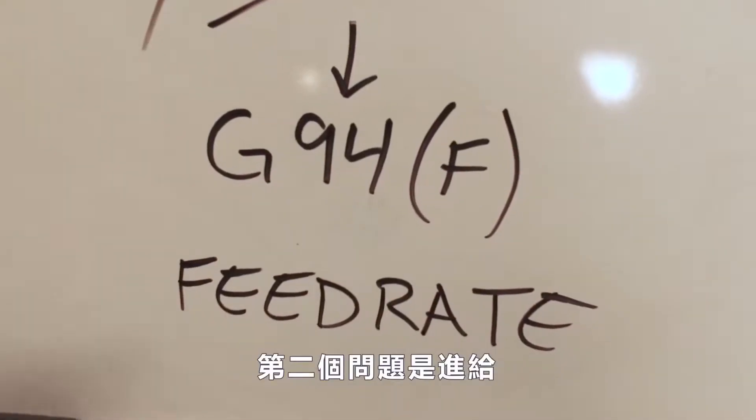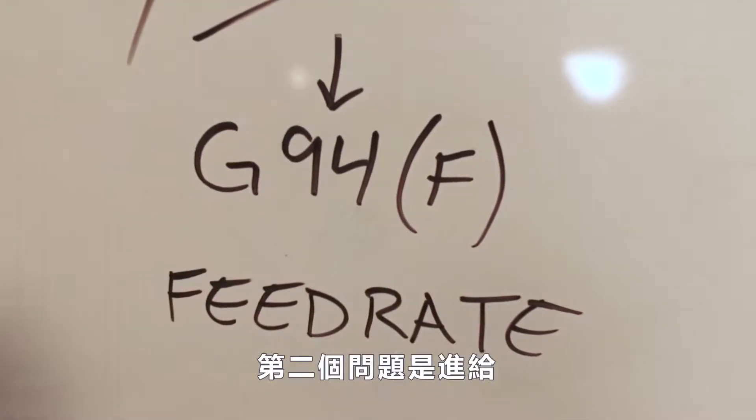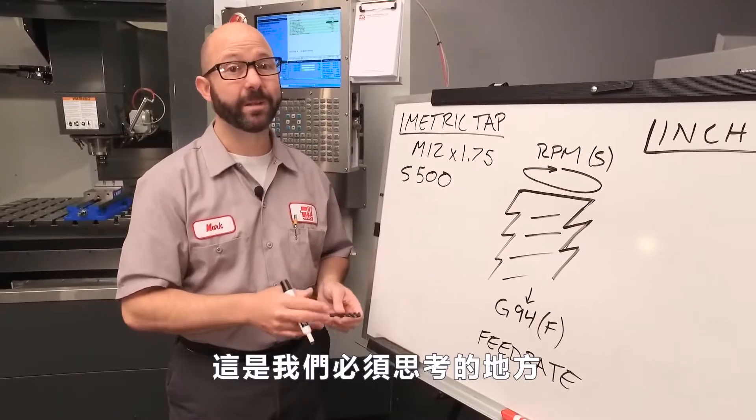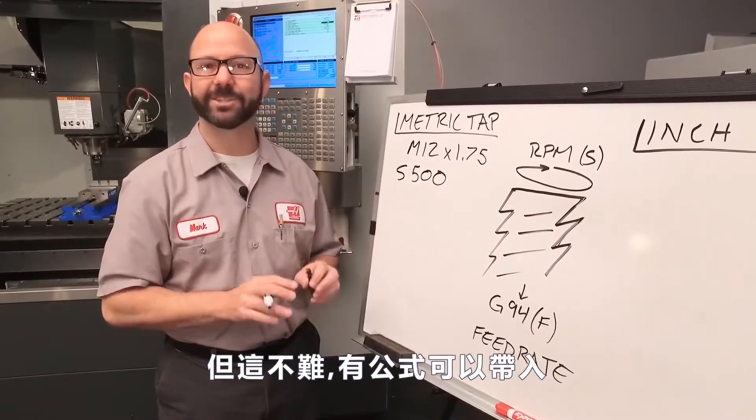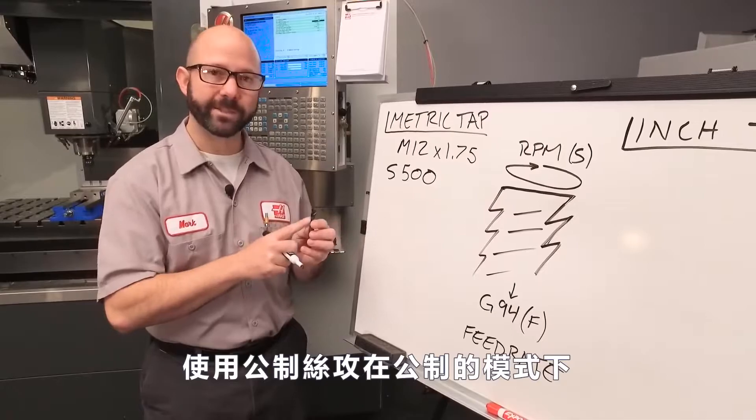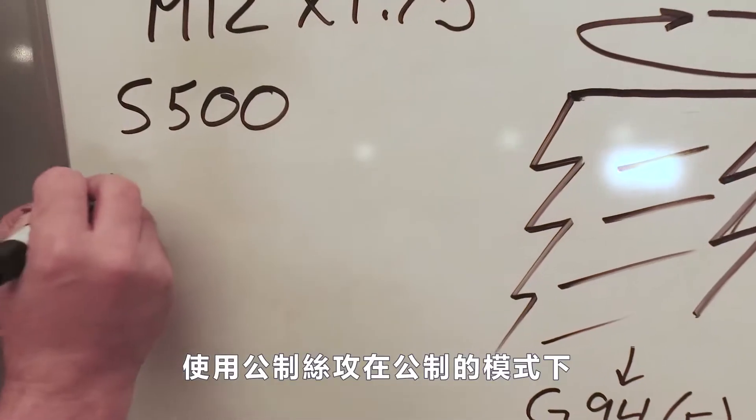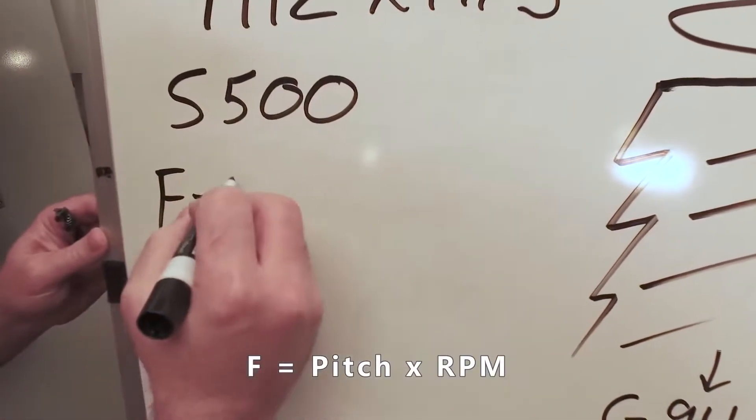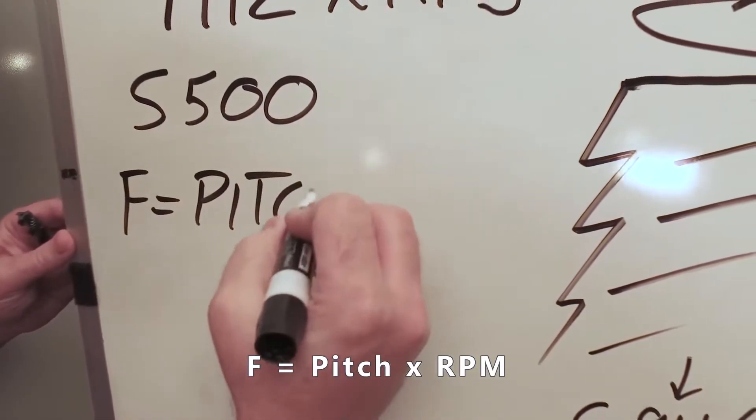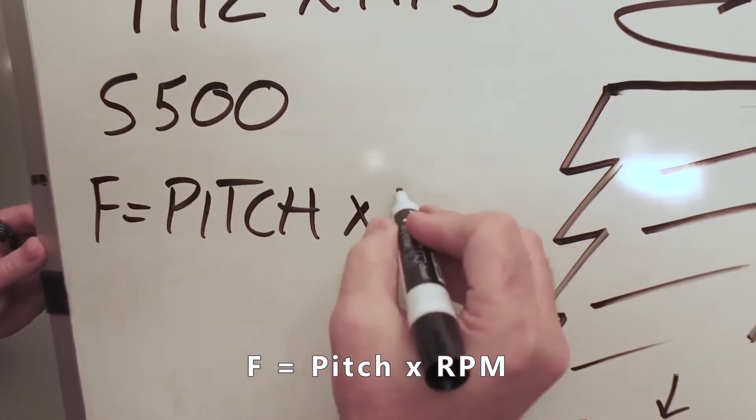Now the second piece to our puzzle is our feed rate, our F value. For this, we need to put on our thinking caps. It's not too hard because we've got a formula. Now for a metric tap on a machine in metric mode, F equals pitch times RPM.